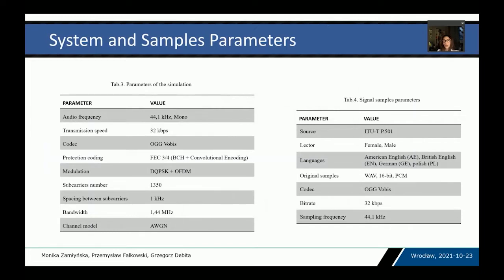Here we have the parameters of the system and audio samples. The original files were prepared in OGG format with a 32 kilobits-per-second bit rate and a 44.1 kHz sampling frequency. Simulink reads at the same sampling frequency and every sample is represented by a 16-bit value. After channel coding and modulation, the audio signal occupies 1.44 MHz of bandwidth.